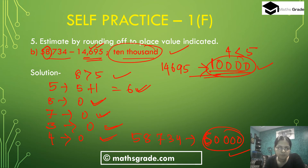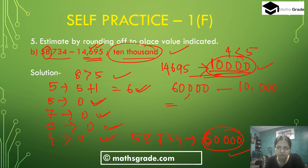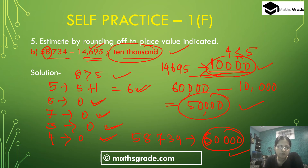Now we subtract: 58,734 rounded to the nearest 10,000 is 60,000, minus 14,695 rounded to the nearest 10,000 is 10,000. So 60,000 minus 10,000 equals 50,000. Therefore, estimating 58,734 minus 14,695 to the nearest 10,000 gives us 50,000 as our answer.